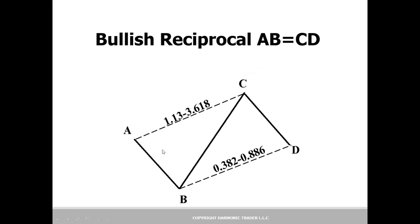Here is an illustration of a bullish reciprocal ABCD. This could be the first thrust in a countertrend move in a larger uptrend, and then we have a secondary thrust. Usually these are generally approximate if the channel is valid. Depending on what the extension is at the C point, we look for a corresponding retracement. If it was a 1.618 at the C point, we would look for a 1.618.